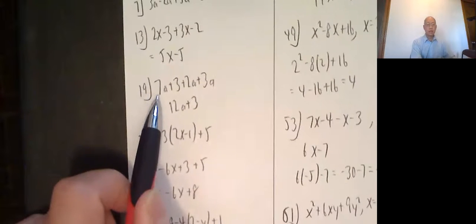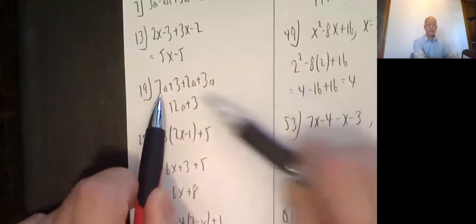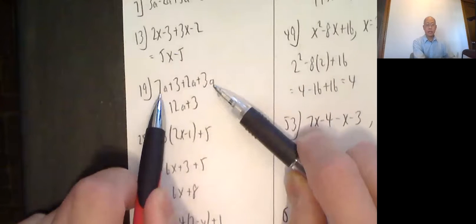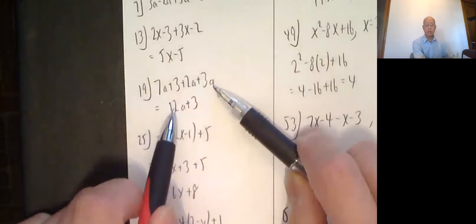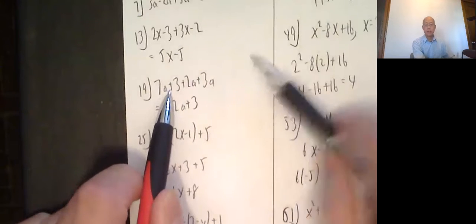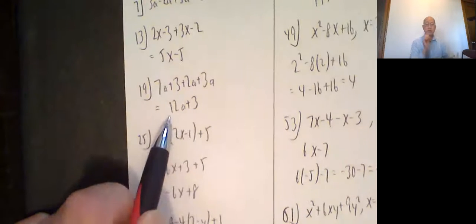Number 19. I combine all the a's, 7a, 2a, and 3a. Those are like terms. So I add the coefficients. 7 plus 2 plus 3 comes out to be 12a. Plus the only number is 3, so I just leave it as 12a plus 3.